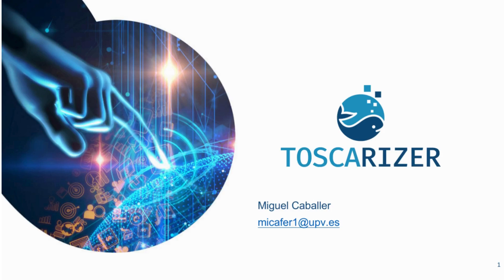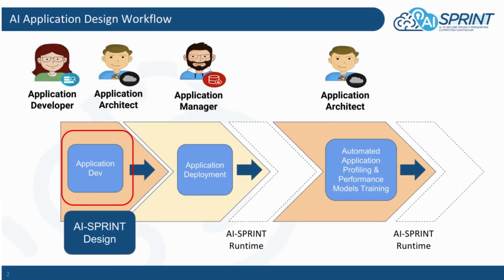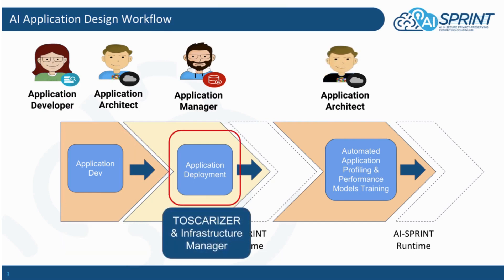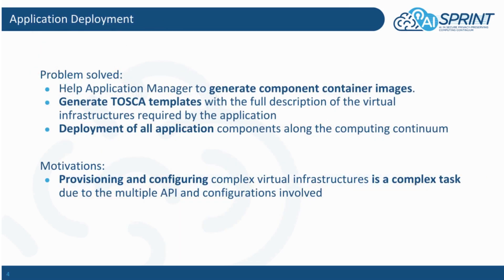Now we are going to show the tool Toscarizer. After finishing the application deployment, we can move to the next step — the application deployment where the Toscarizer and Infrastructure Manager are the key components. The Toscarizer tool helps the user to generate component container images and generate TOSCA templates with the full description of the virtual infrastructure required by the application, and the deployment of all the application components along the computing continuum.